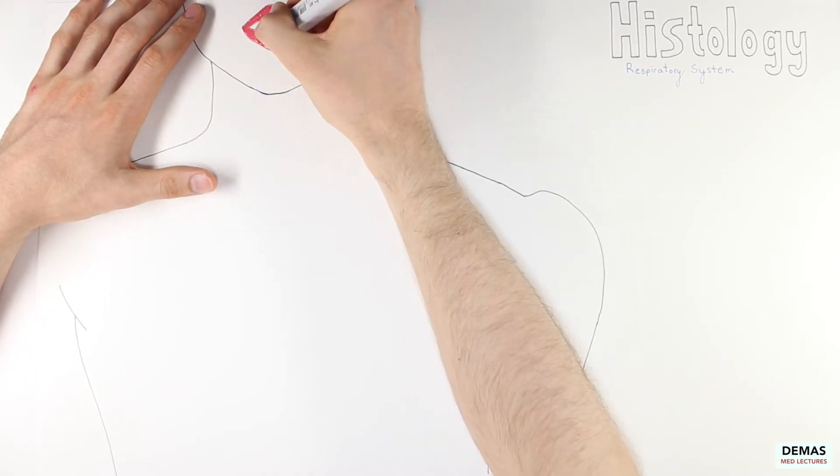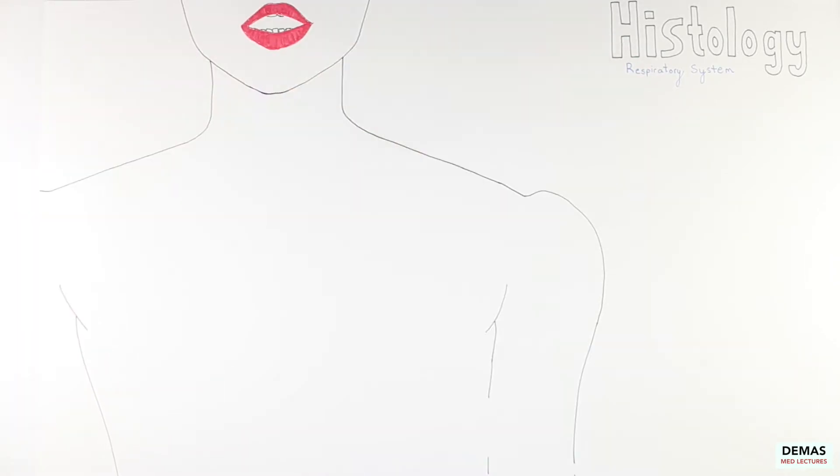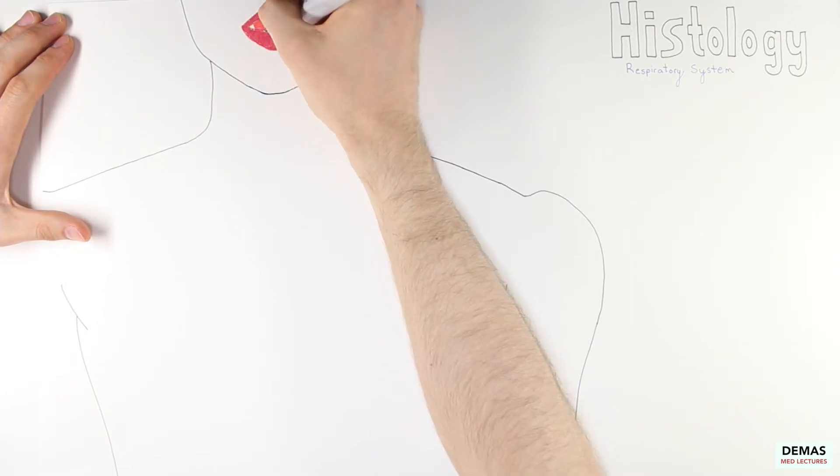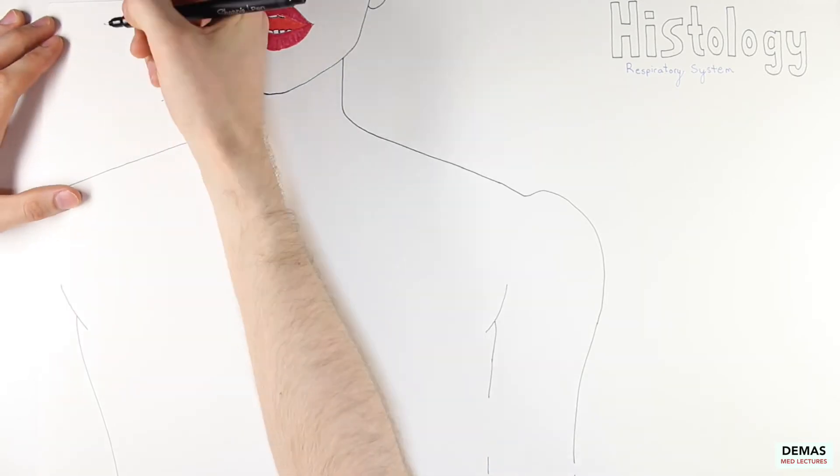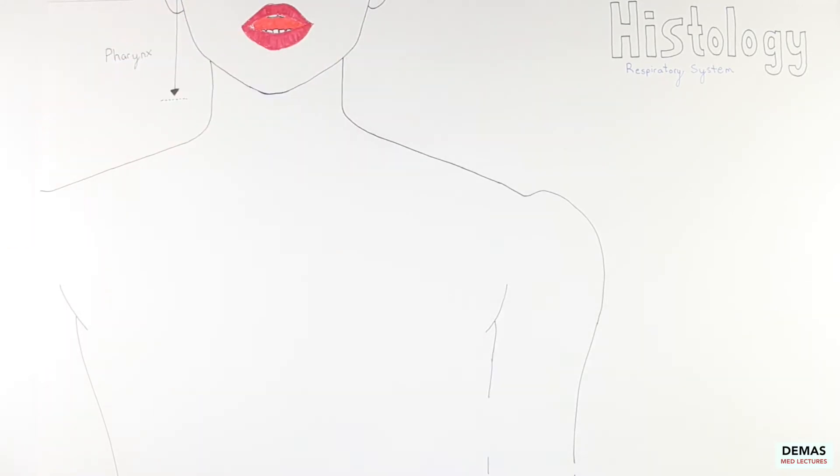The first part of the respiratory system involves the orifices that allow for air to enter the system, which includes the mouth and the nose. Air then enters the mouth, or the nasal cavity, and then these two air pathways combine to form the pharynx.